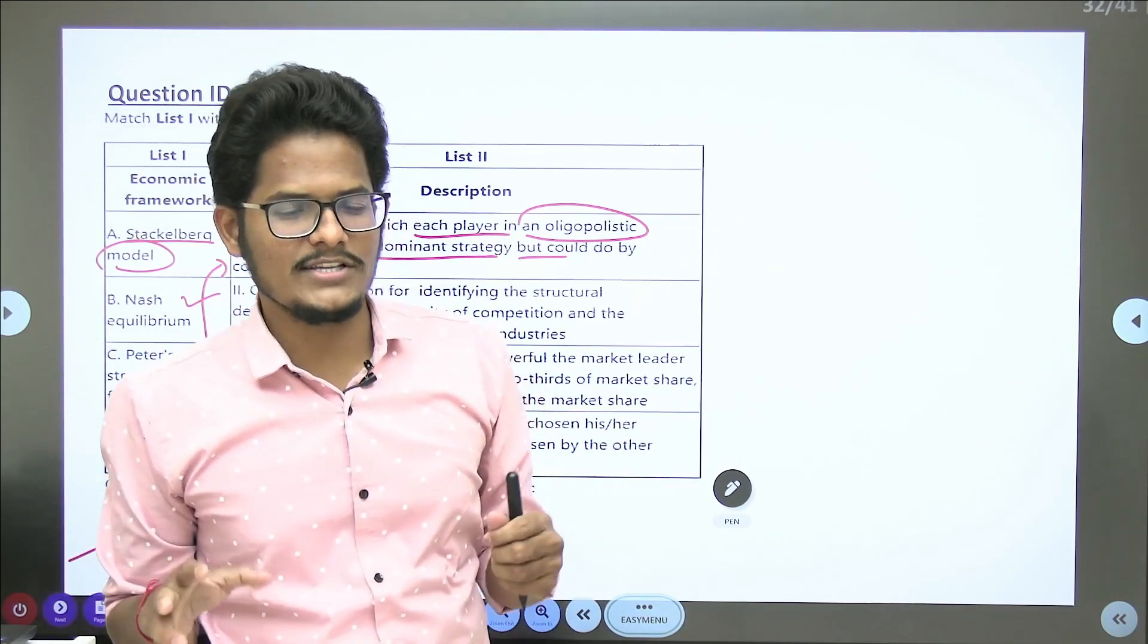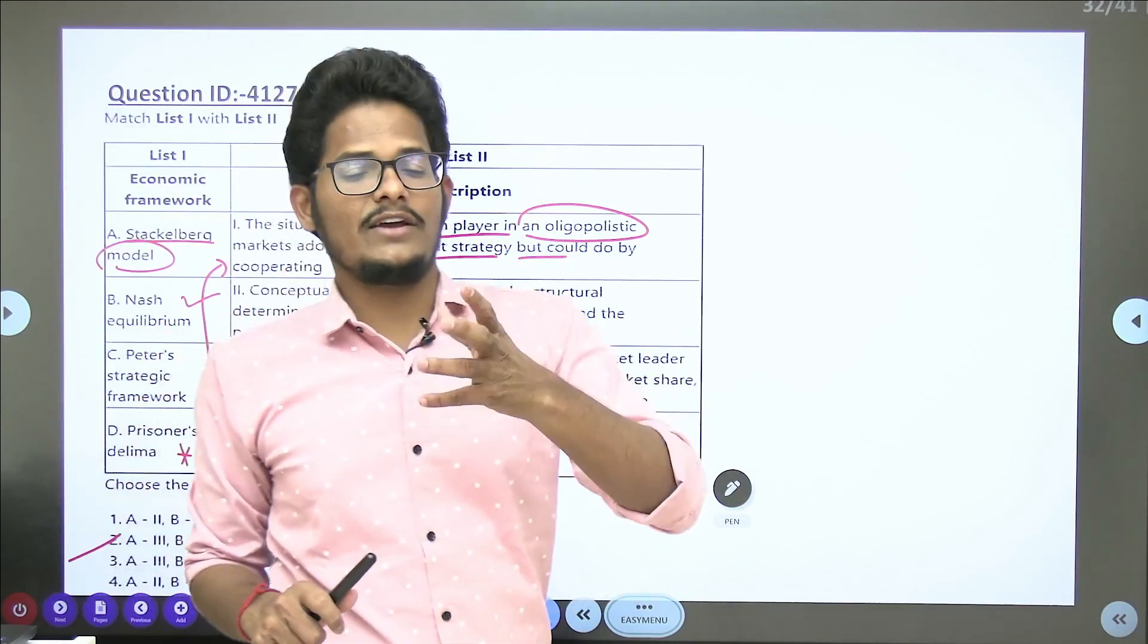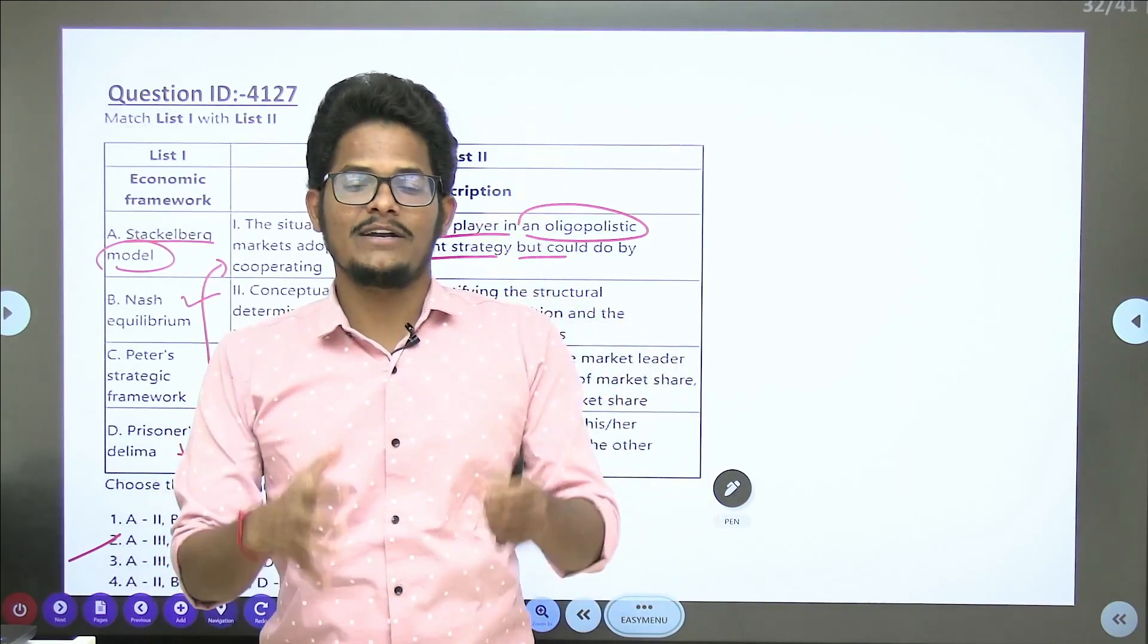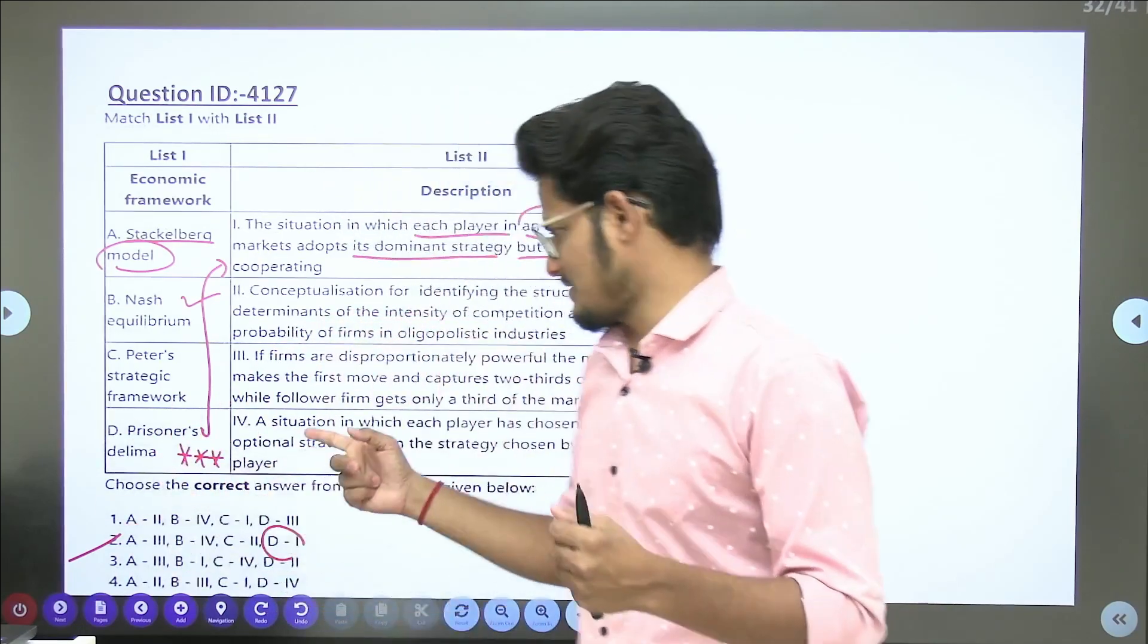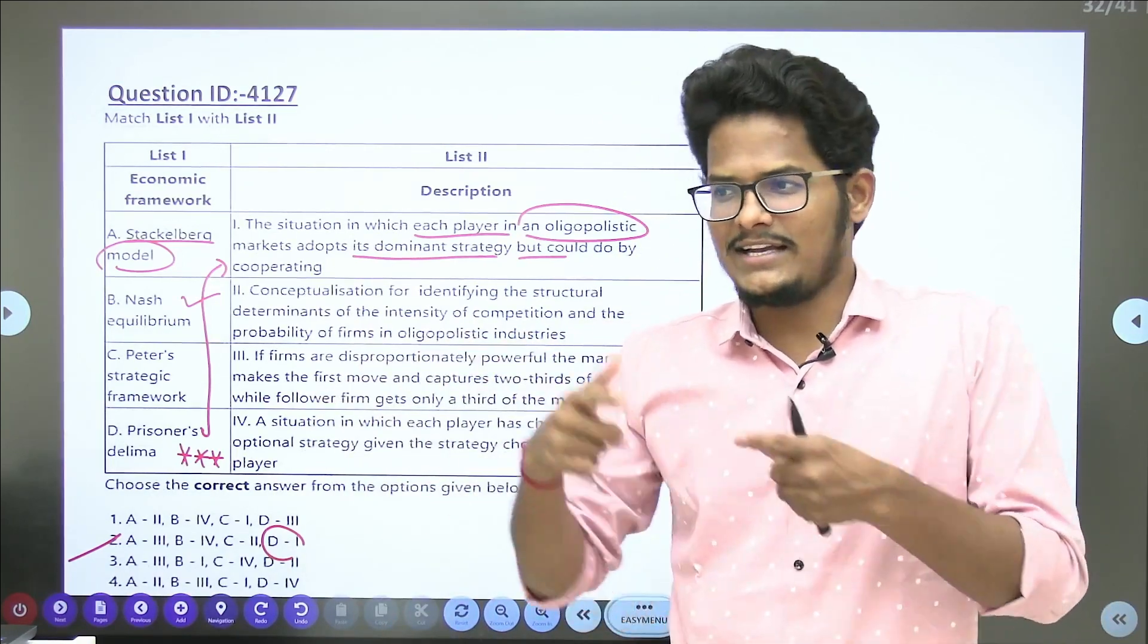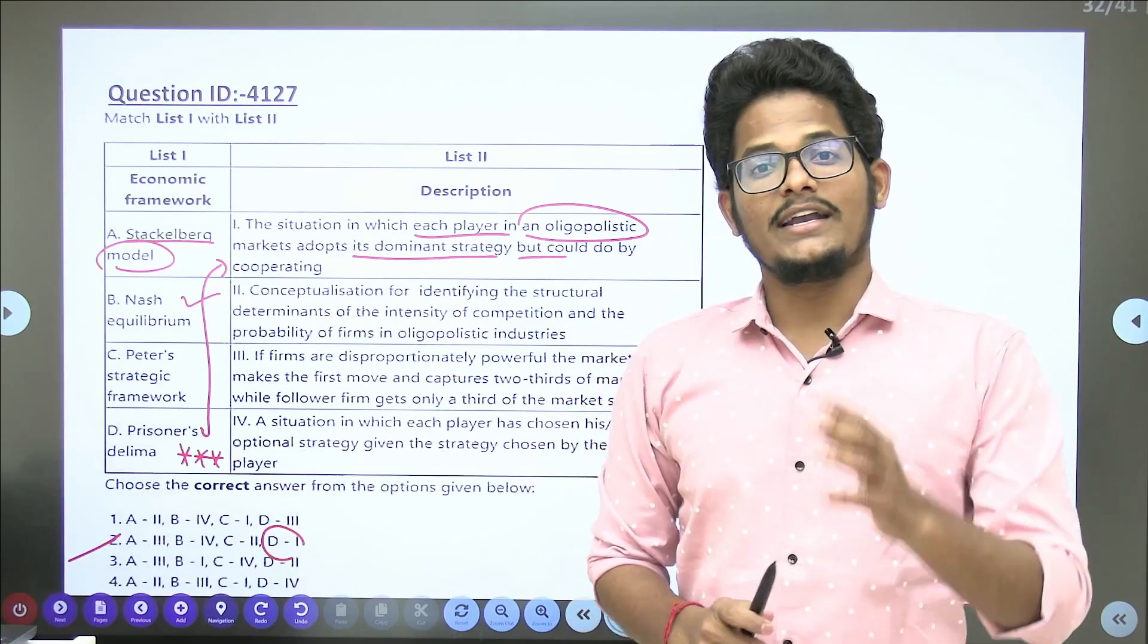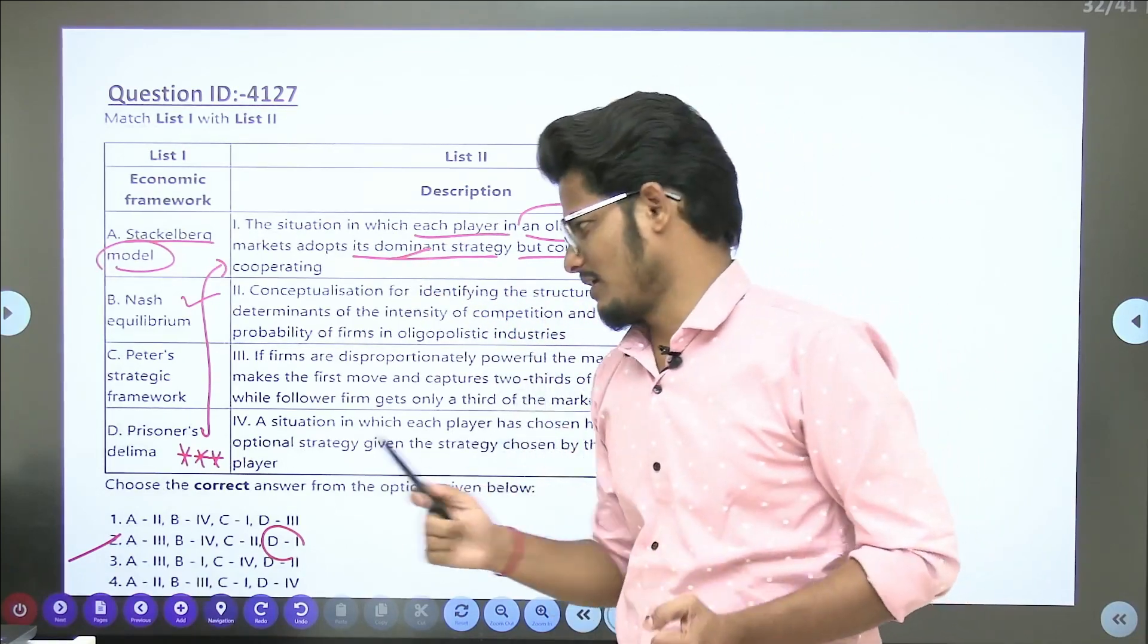In oligopoly, few large firms will be there having big type competition and they will avoid price war. If any large entity is changing price, immediately competitor also will change prices. To avoid that, we should work in cooperative mechanism. That type of dilemma - do I need to compete or cooperate with the market to maintain same price? That's prisoner's dilemma.